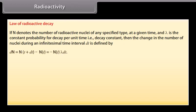Dn is equal to N T plus DT whole minus N T, which is equal to minus N T lambda DT. The negative sign indicates that nuclei decreases as a result of decay.